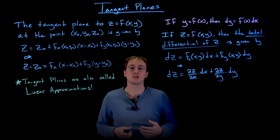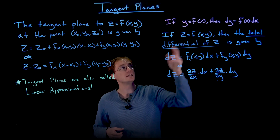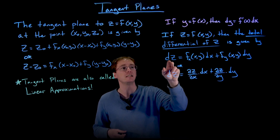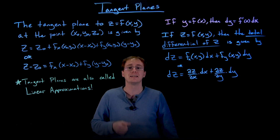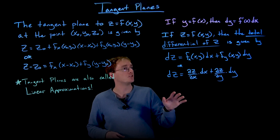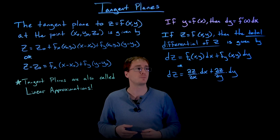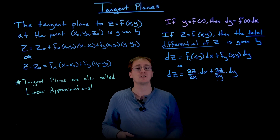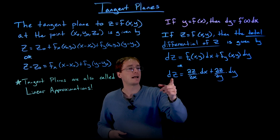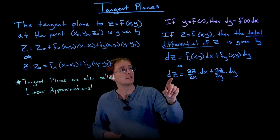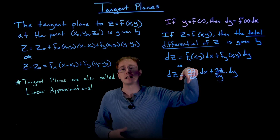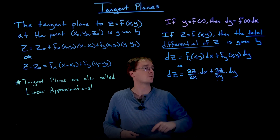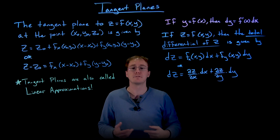The total differential extends that idea to a function of two variables. If z equals a function of x and y, we denote the total differential of z as dz — note this is a straight d, not the curly d used for partial derivatives. The total differential dz is given by the partial derivative of f with respect to x times dx, plus the partial derivative of f with respect to y times dy. We can also write this using Leibniz notation as (∂z/∂x) dx + (∂z/∂y) dy.